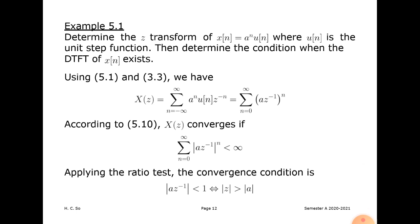Example: determine the Z-transform of x(n) = a^n · u(n), where u(n) is the unit step function. The unit step function is u(n) = 1 for n ≥ 0, and 0 otherwise. We use the formula: x(z) = Σ(n = −∞ to +∞) a^n · u(n) · z^(−n).